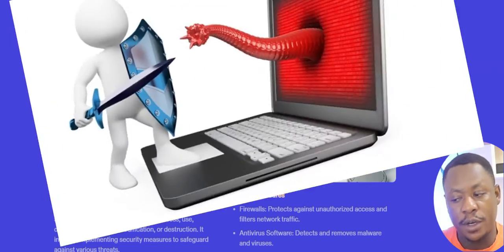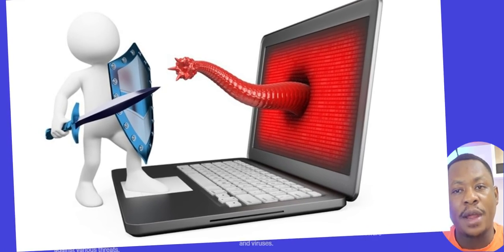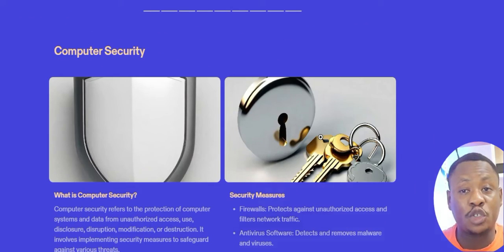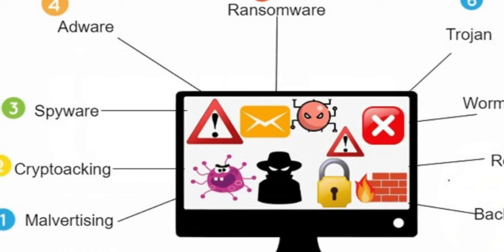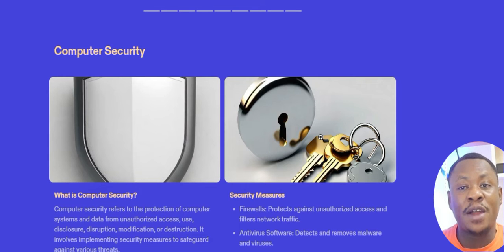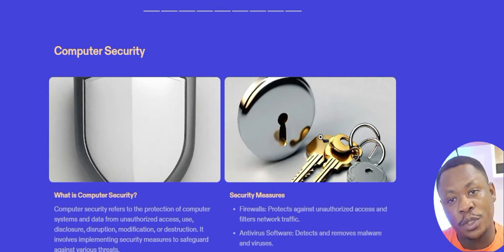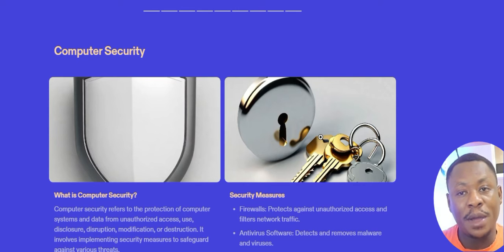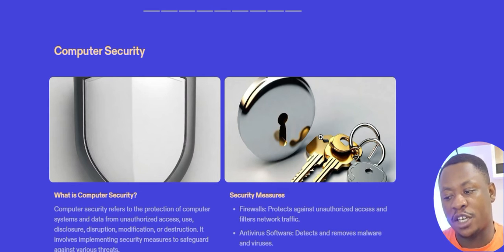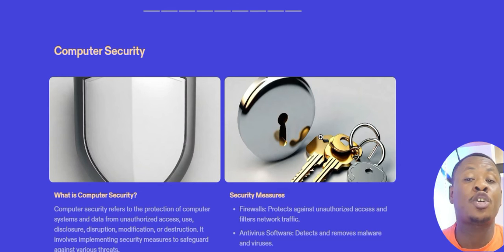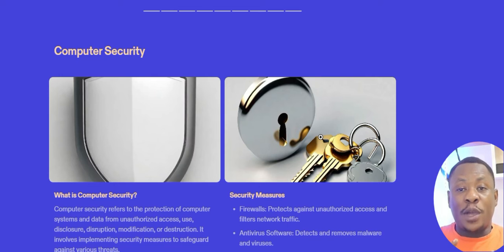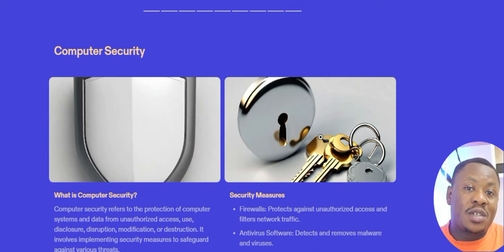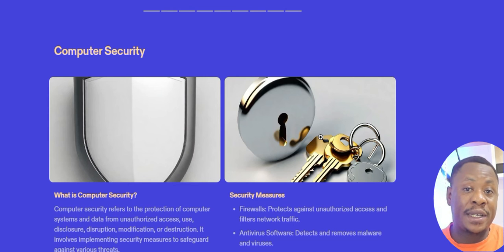We also have antivirus software, which detects and removes malware and viruses. Any virus that comes onto your computer to disrupt files — the antivirus software will detect and remove it. The last measure is encryption, which converts data into a secret code to prevent unauthorized access. Most encryptions are in the form of passwords and security codes. If you put a password or pattern on your phone, that is a form of encryption.